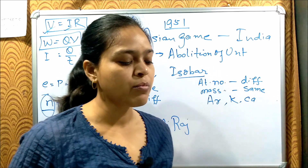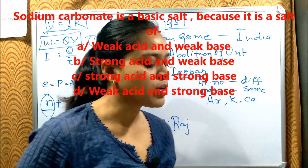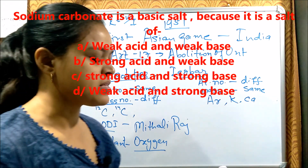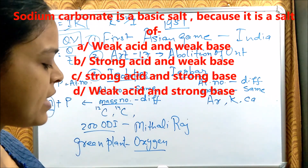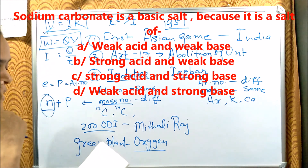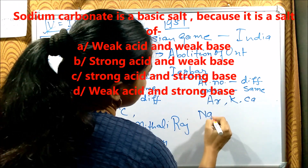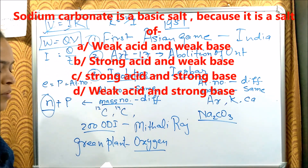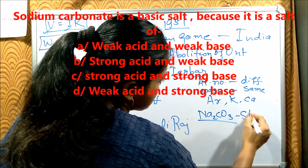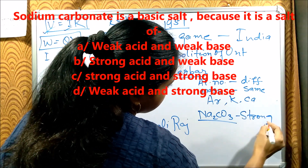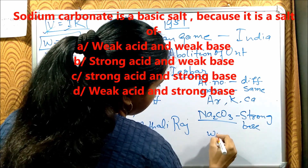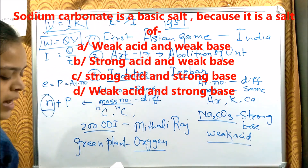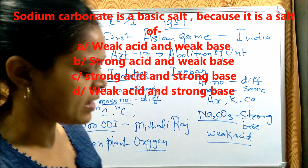Next: Sodium carbonate (Na₂CO₃) is a basic salt. The options are: weak acid–weak base, strong acid–weak base, strong acid–strong base, or weak acid–strong base. Sodium carbonate is formed from a strong base and a weak acid, so option D — weak acid, strong base — is correct.